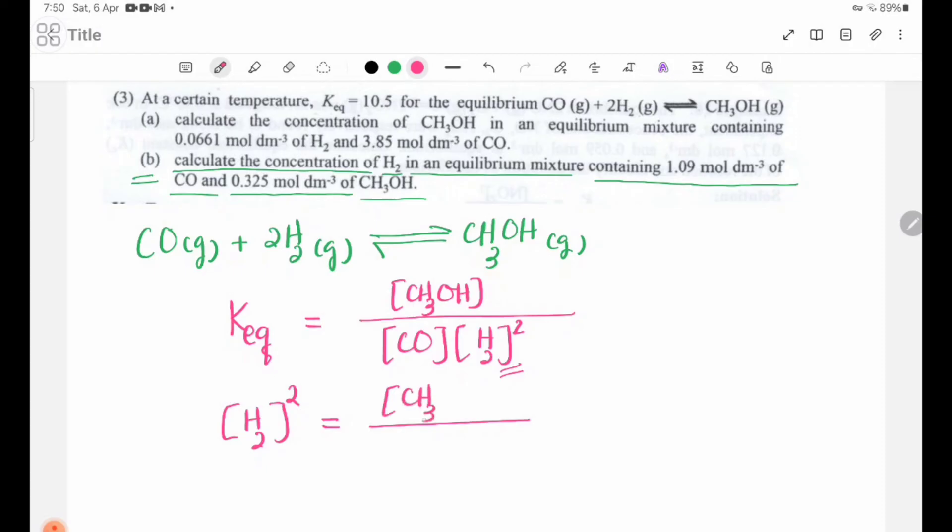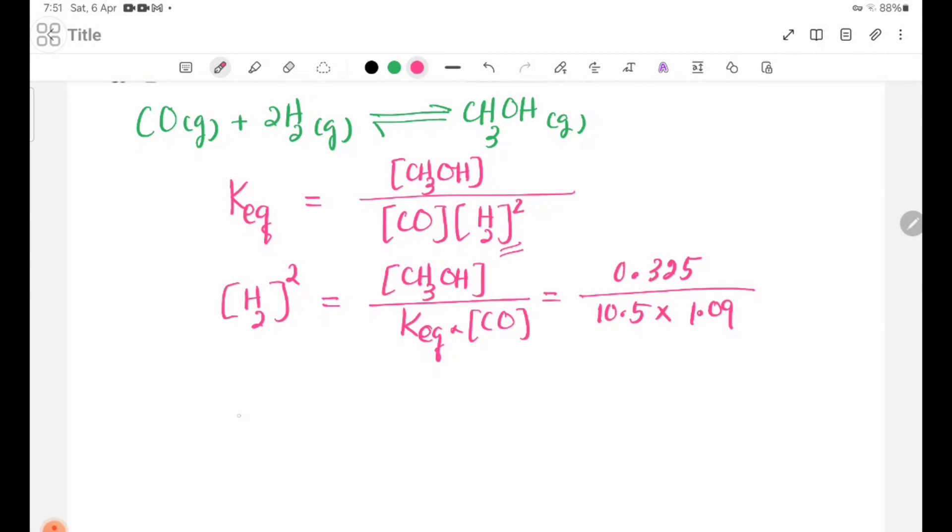CH3OH concentration is 0.325, Keq is 10.5, and CO concentration is 1.09. Substituting these values to solve for H2 concentration.